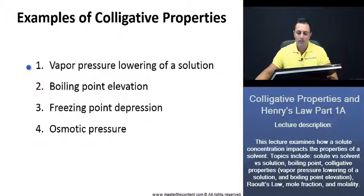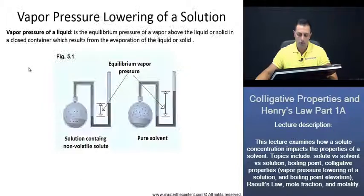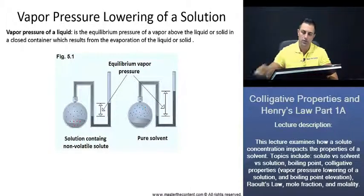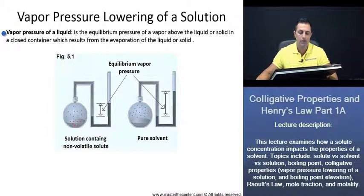Great. Now, let's begin first with the vapor pressure lowering of a solution. Vapor pressure of a liquid is the equilibrium pressure of a vapor above the liquid or solid in a closed container, which results from the evaporation of the liquid or solid. Now, if we take a look here at figure 5.1, we can take a look at our manometers here to discern vapor pressure.